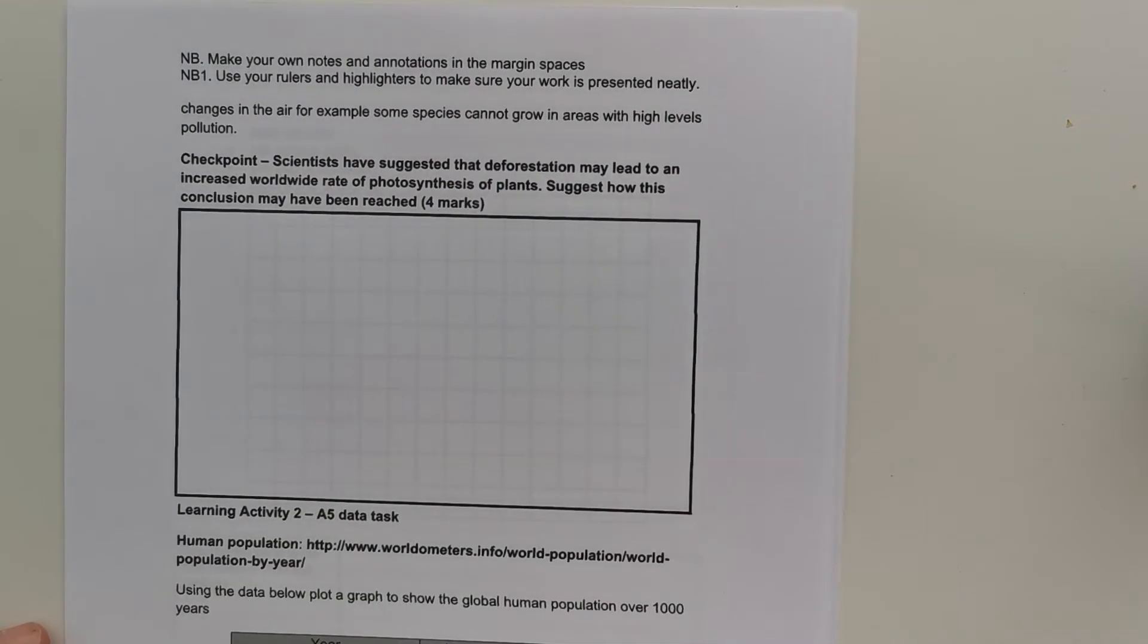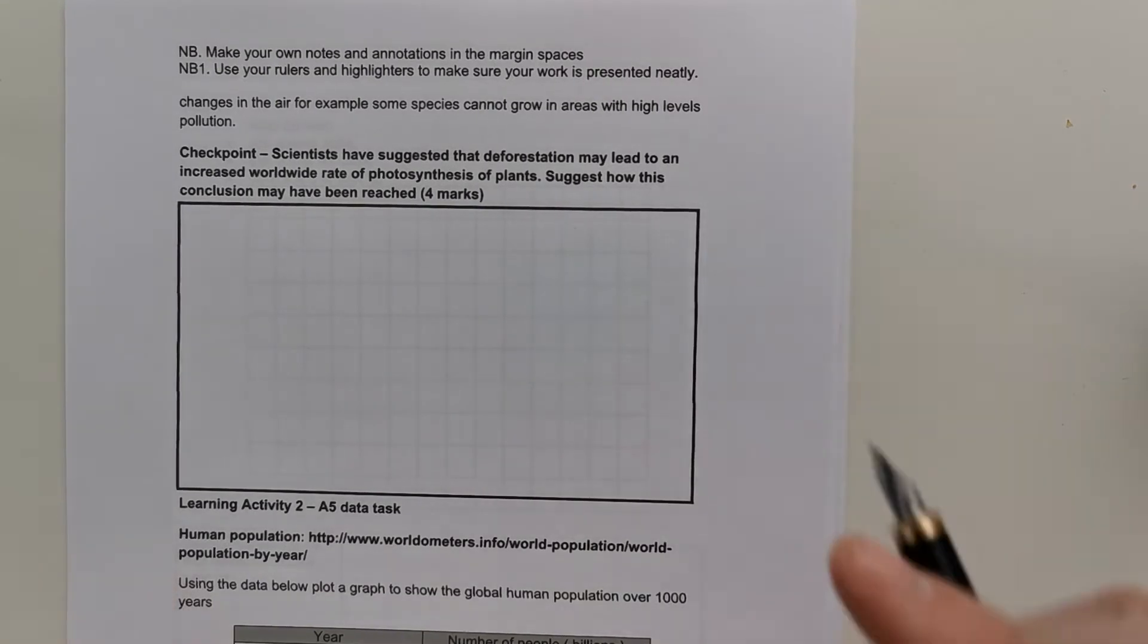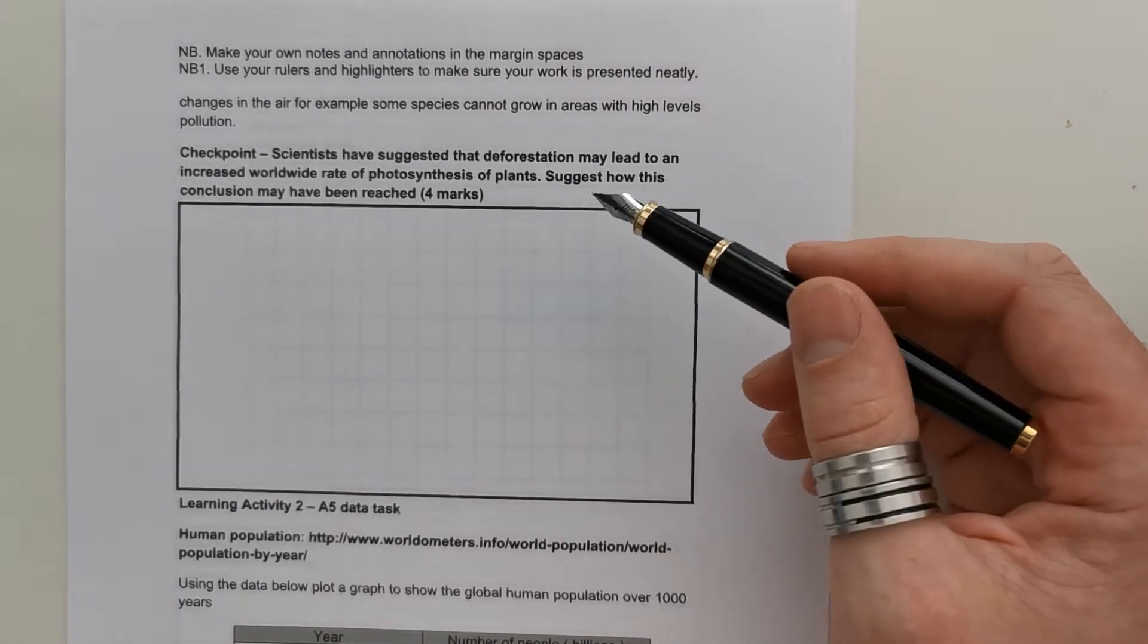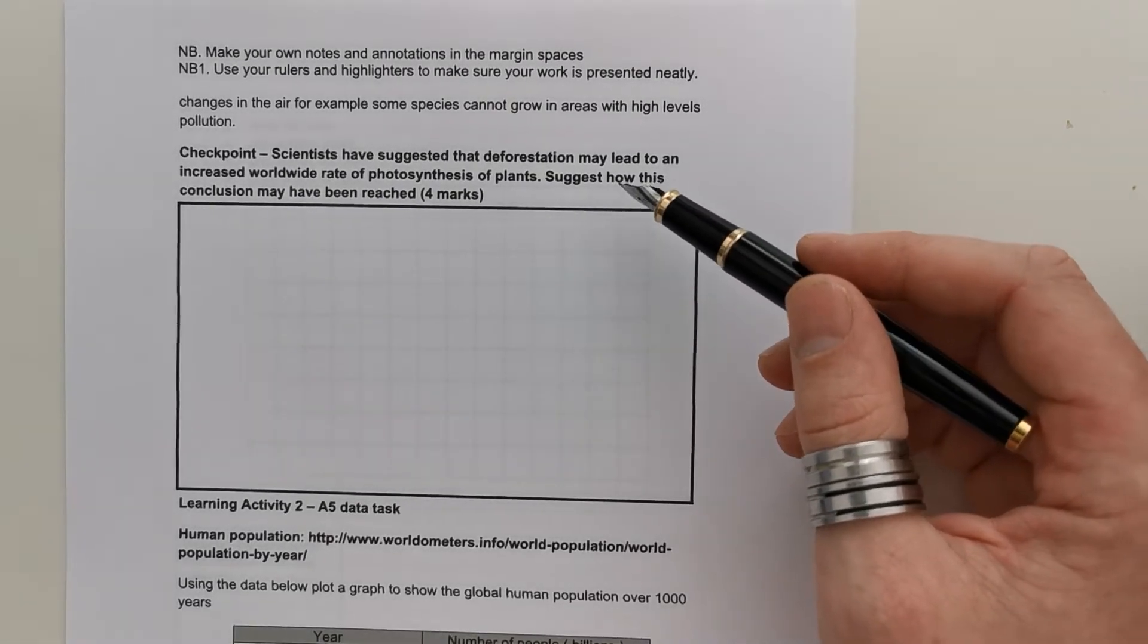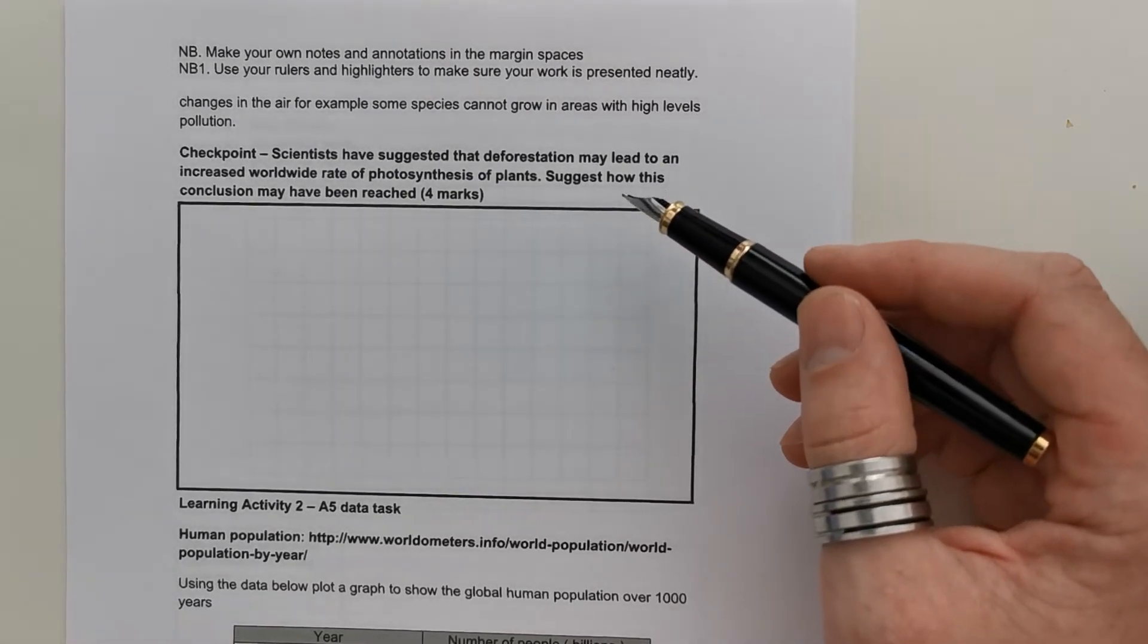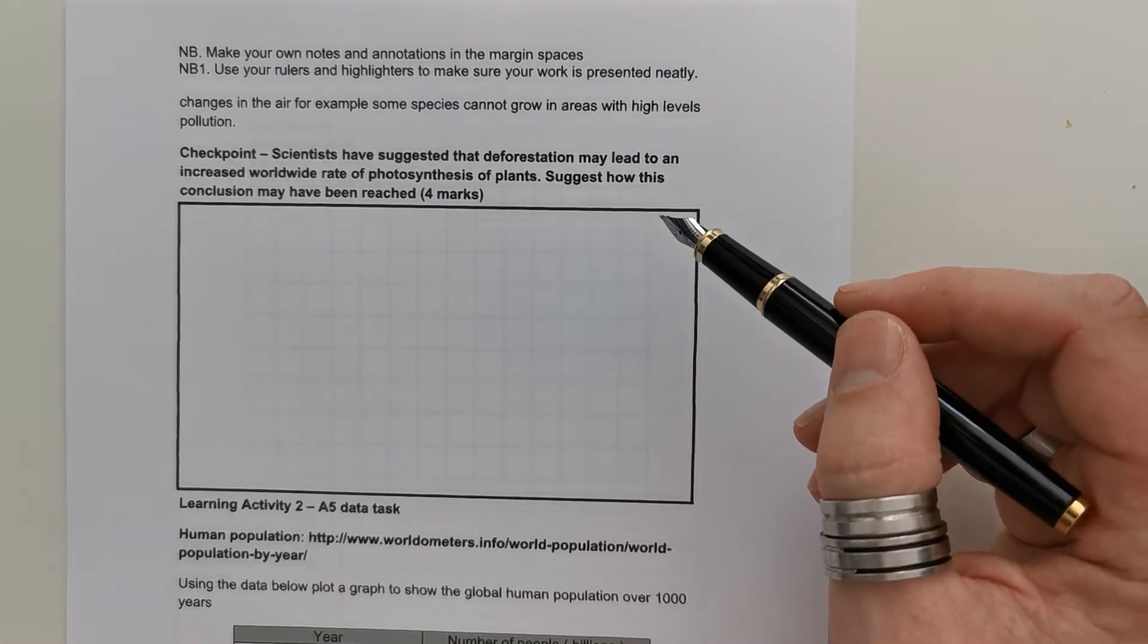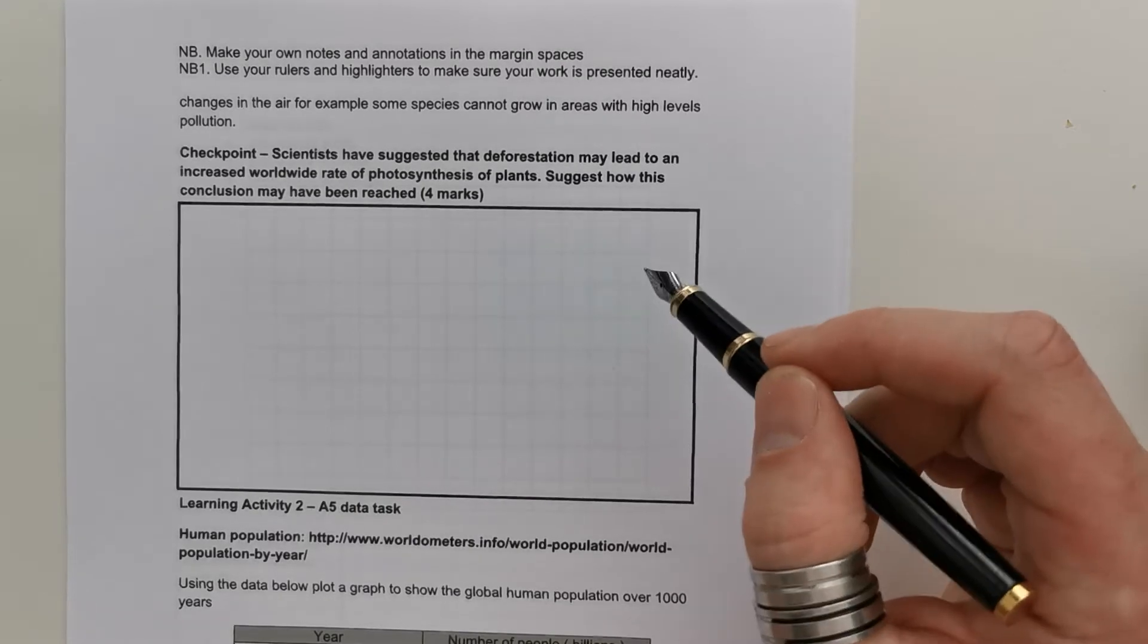Now, can you have a go at applying it please? So, pause the video and have a look at the checkpoint question. And see if you can use your notes to answer it. And then unpause the video and come back to it once you've had a go. So, as it says, scientists have suggested that deforestation may lead to an increase in worldwide rate of photosynthesis of plants. Suggest how this conclusion may have been reached.